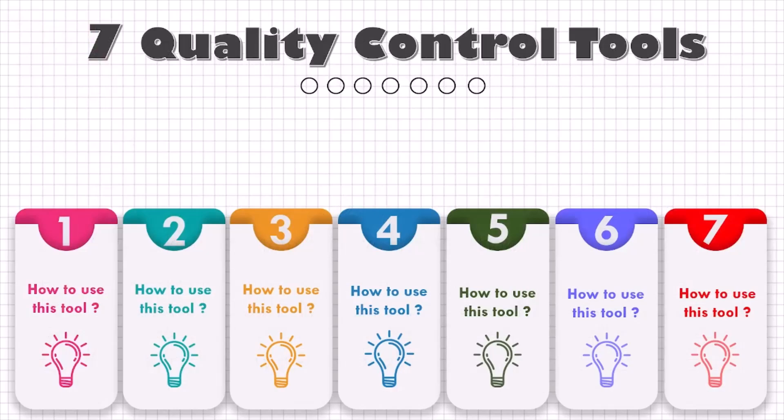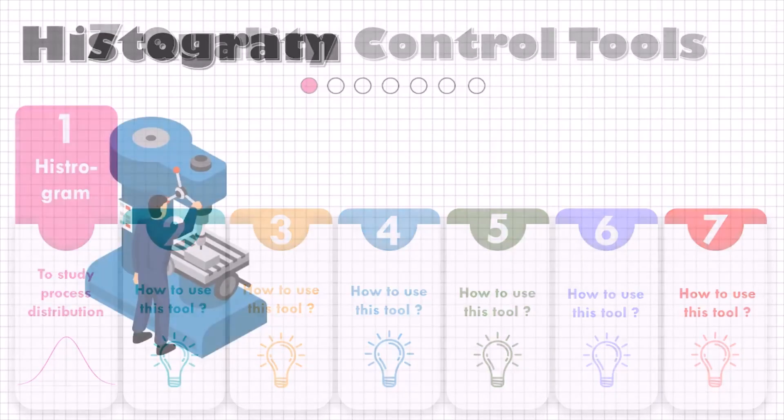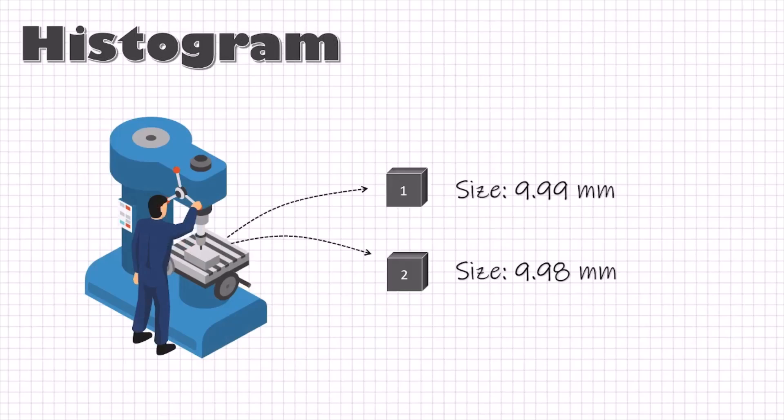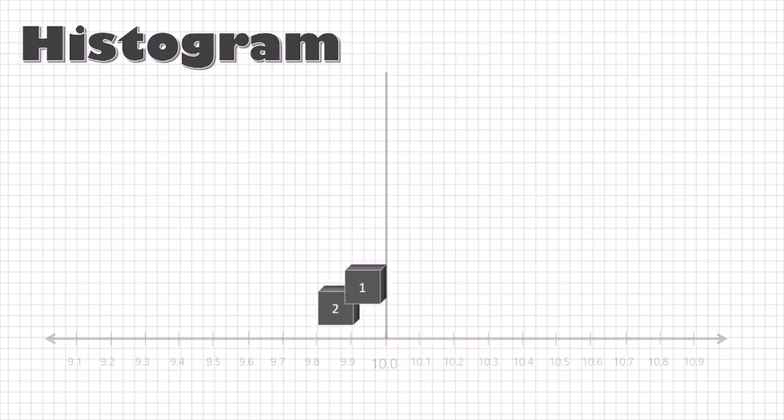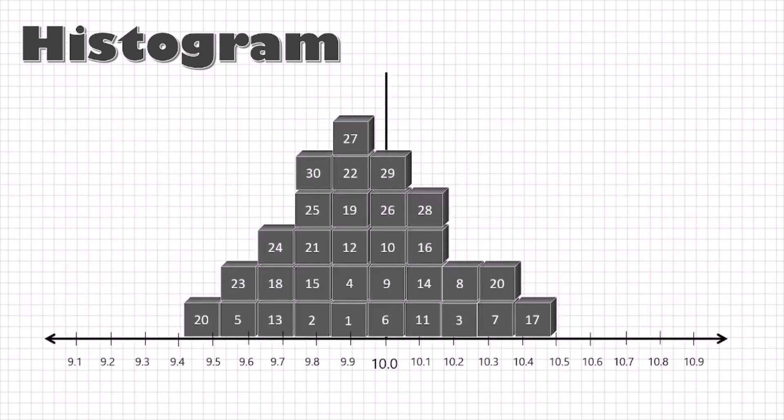So, here are the seven QC tools we are talking about. Let's review each one of them in details starting with histogram. Each process has a natural variation. That means the outputs of any one process will not exactly be the same. And this variation is generally a normal distribution.